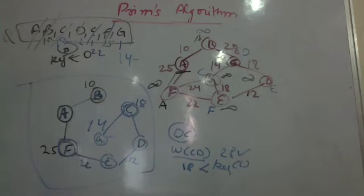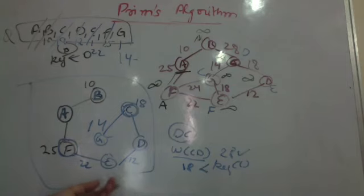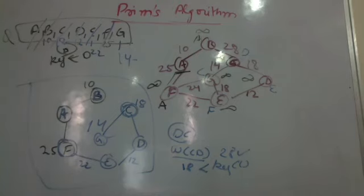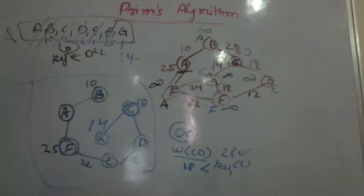This gives the final minimum spanning tree. Please try the example we solved with Kruskal's using Prim's as well — you will get a very similar answer. If there is any doubt, kindly ask.